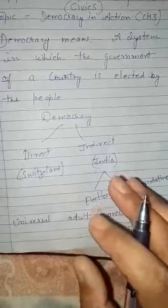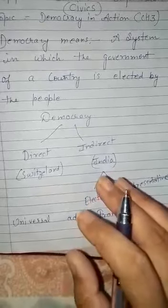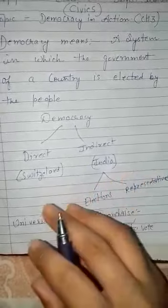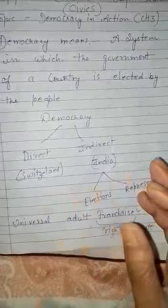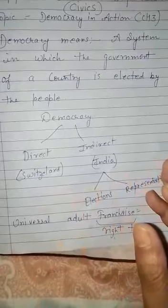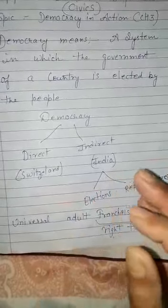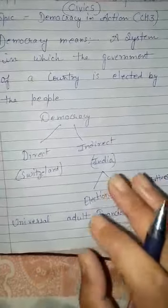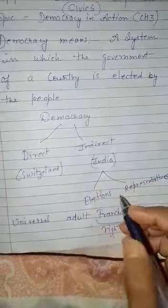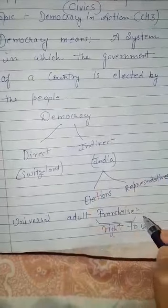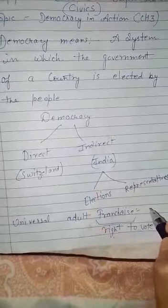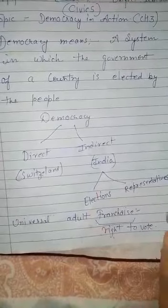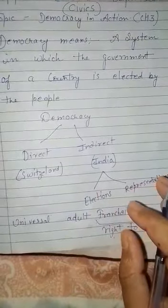Like in our country, people who are 18 and above 18 have voting rights — they can choose their representatives. In other words, franchise, or the right to vote, is available to the entire adult population of the country.